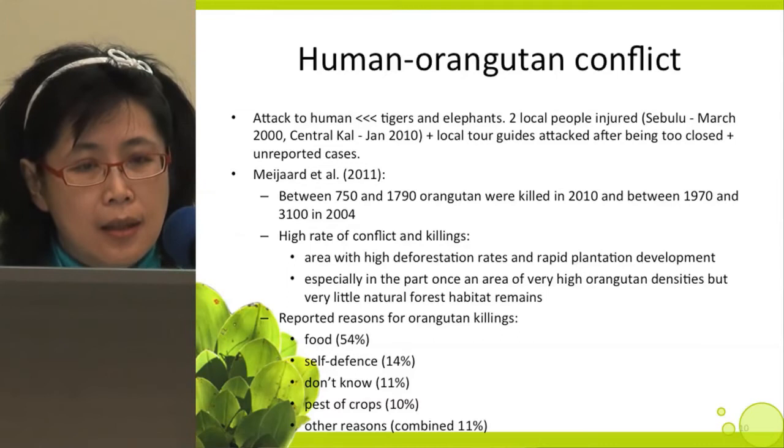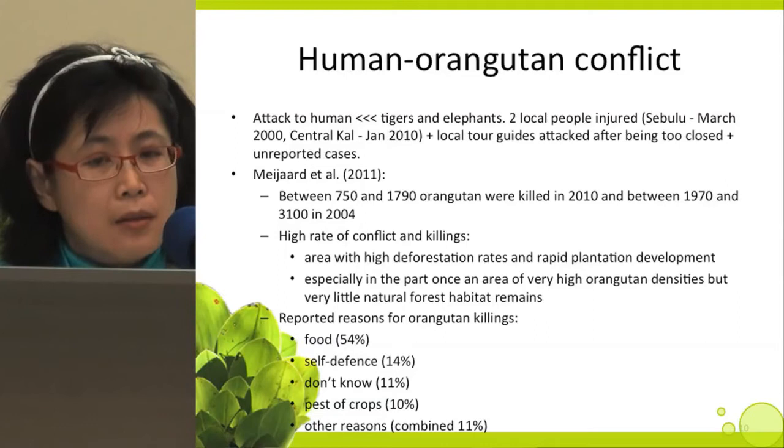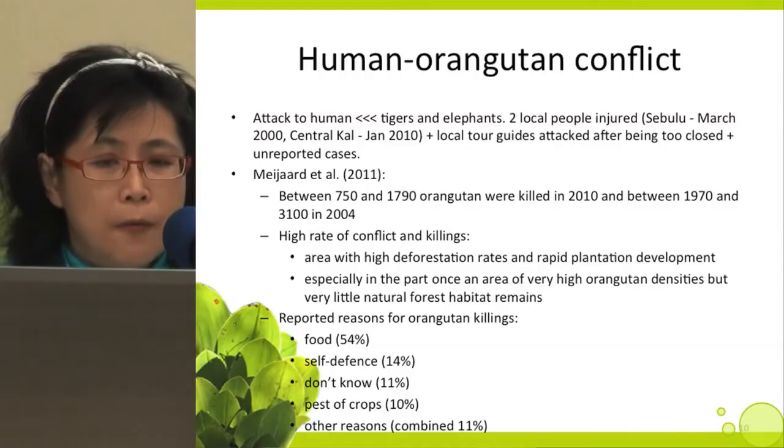The most recent report by Wich and co-authors found that between 750 and 1,790 orangutans were killed in 2010, and between 1,970 and 3,100 in 2004. High rates of conflict and killings are found in areas with high deforestation rates and rapid plantation development, especially in areas once of very high orangutan density but where very little natural forest habitat remains. Reported reasons for orangutan killings: food 54%, self-defense 14%, unknown reasons 11%, pest of crops 10%, other reasons 11%.